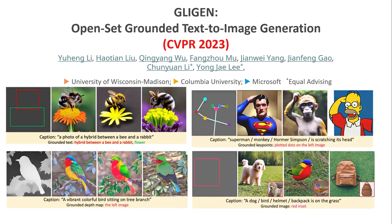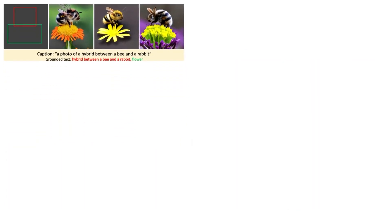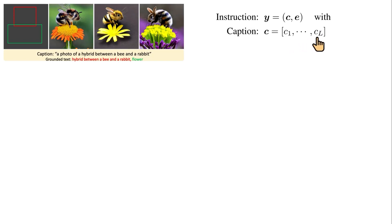To understand how it works, let's pick this sample and see how we can create the grounding tokens and also the caption tokens to use in our diffusion model. The instructions for controlling our diffusion model can be denoted as a tensor Y, which is a mix of C and E. C is just a caption — let's say I have L different tokens, like 'a photo of a hybrid between a bee and a rabbit' — and that's our caption as our control.